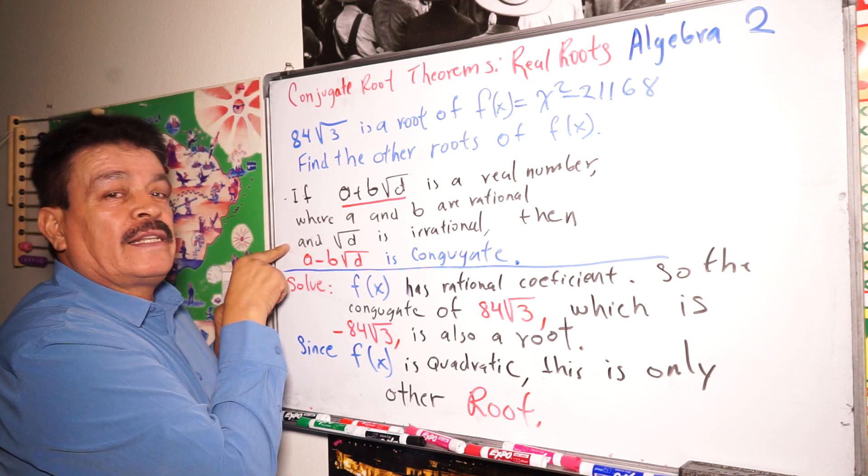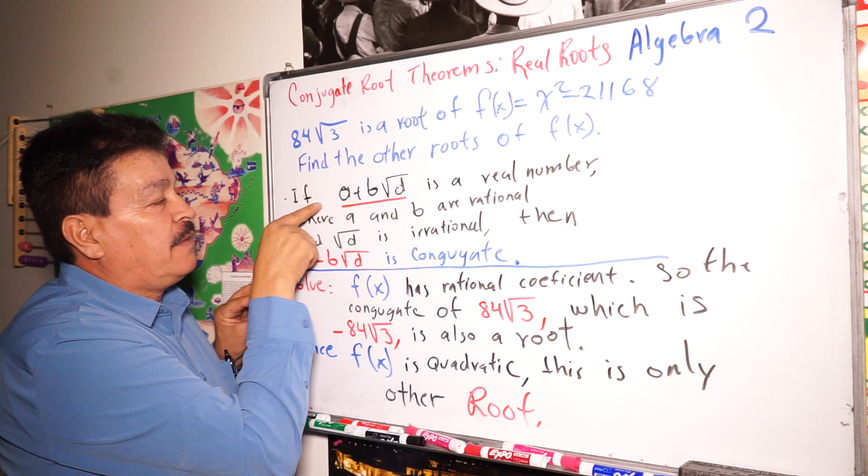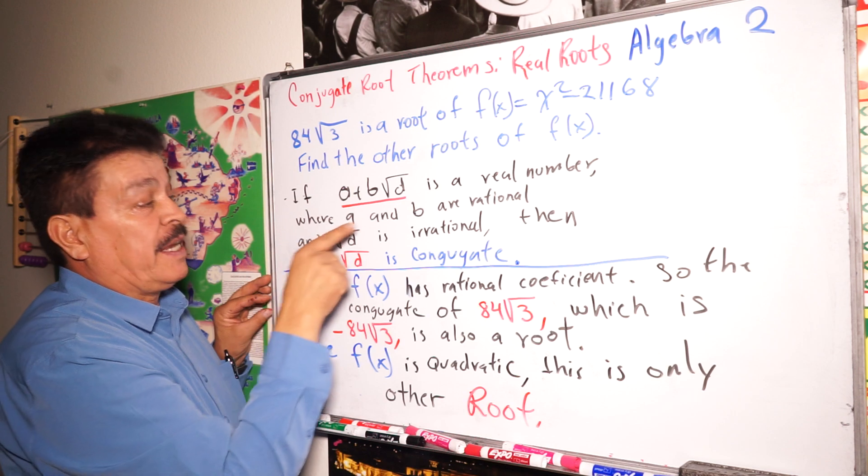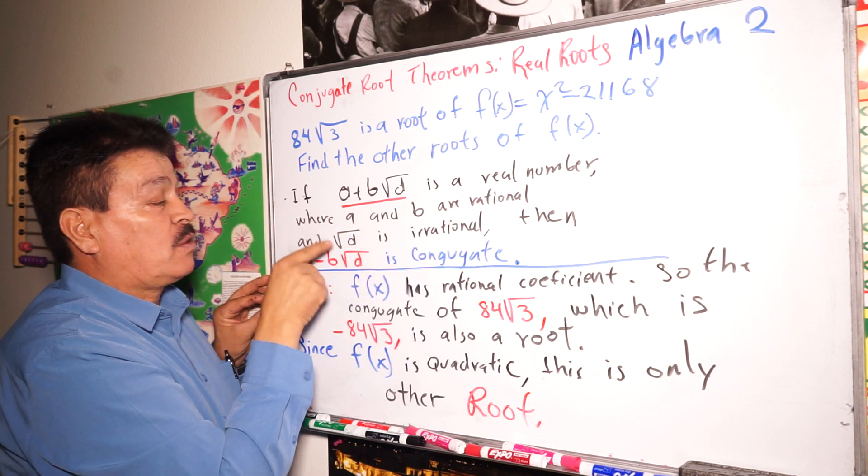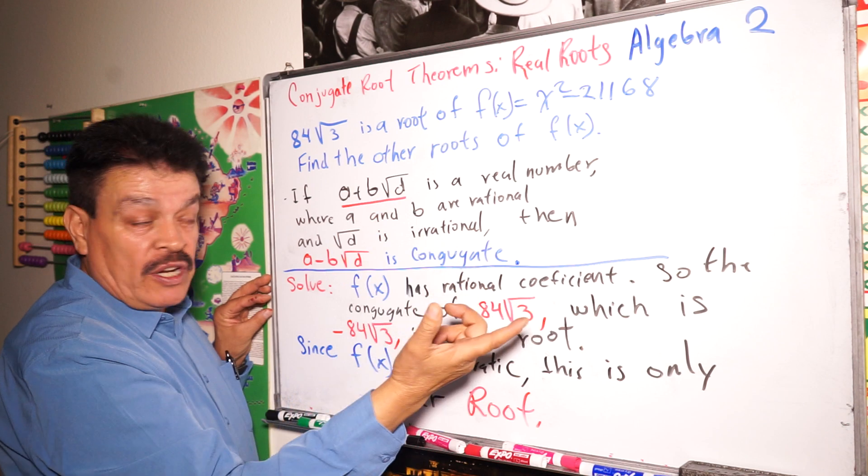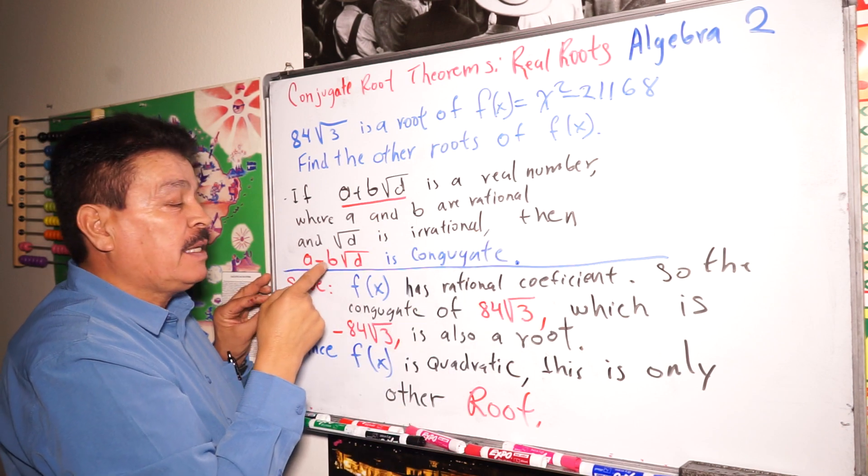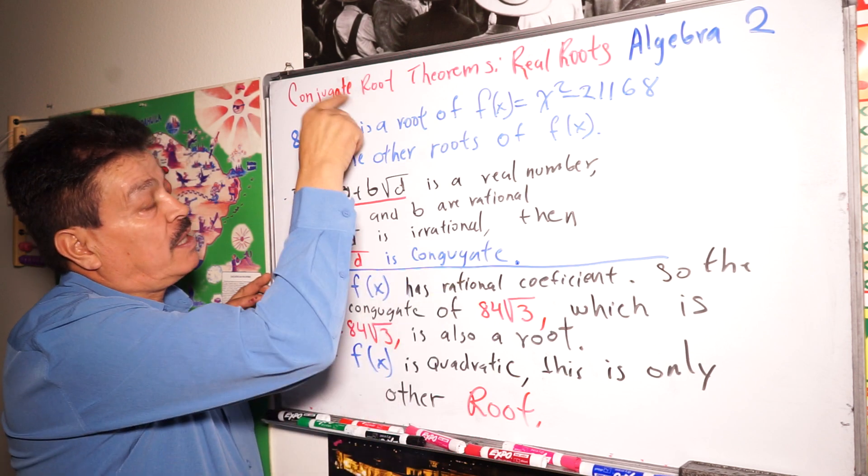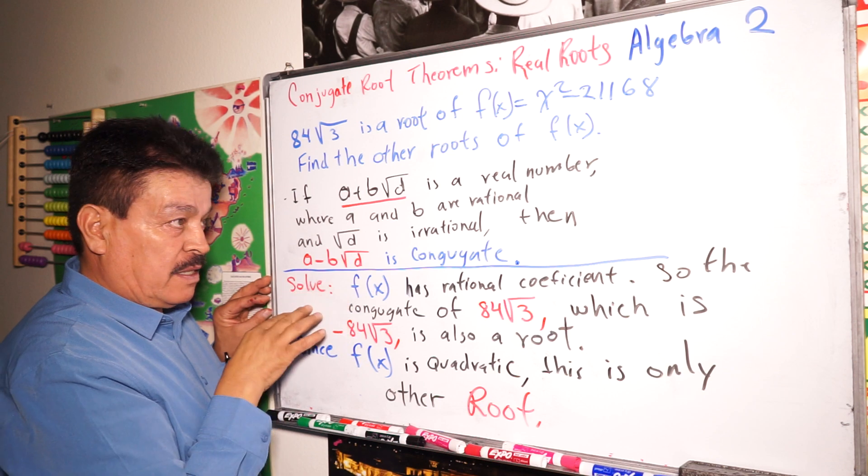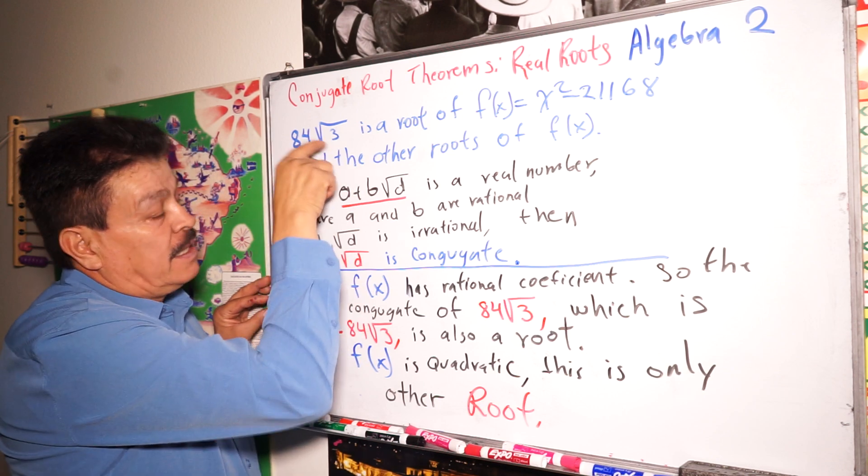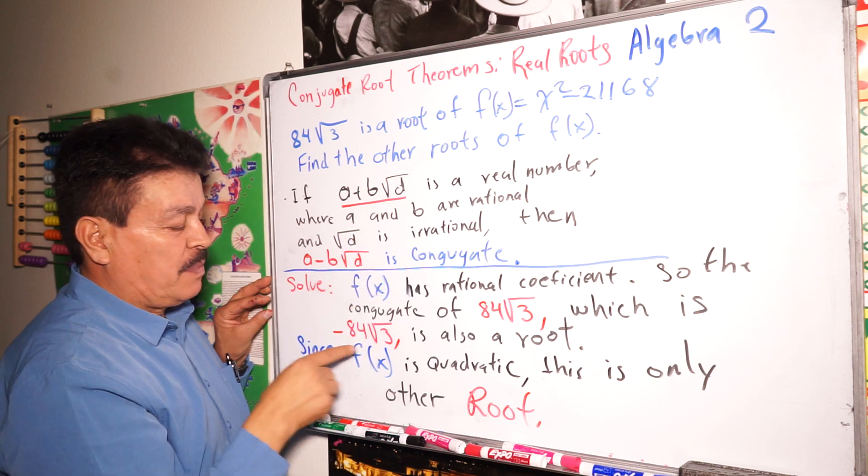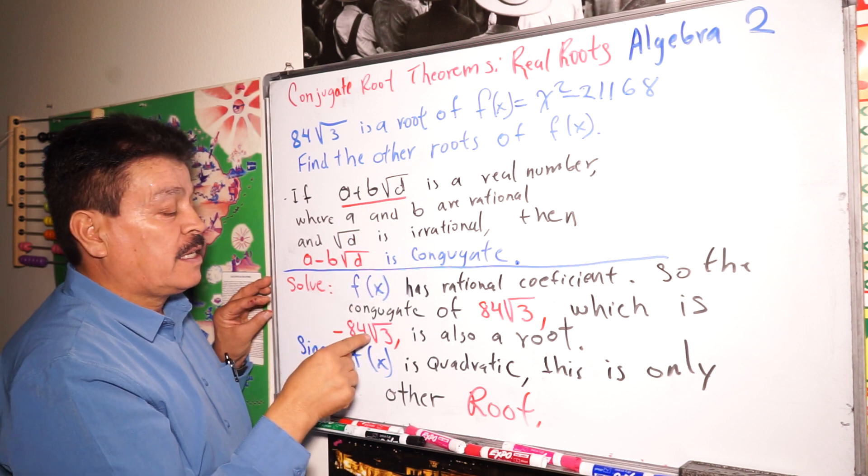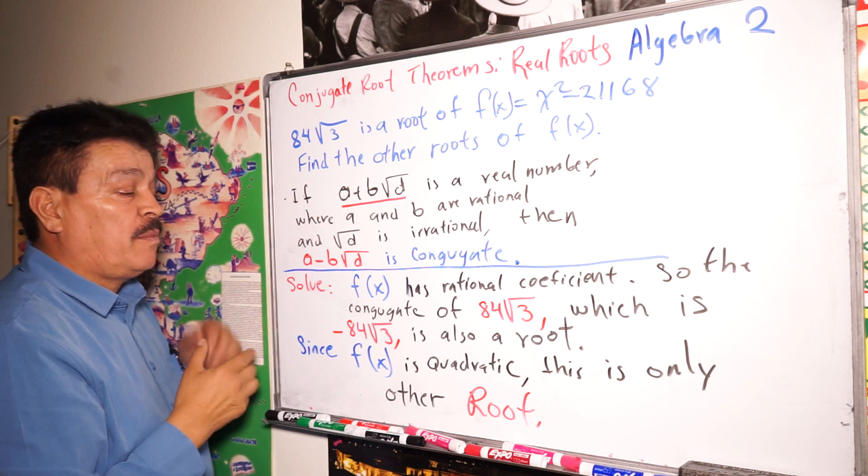When introducing this little concept idea: if a plus b times square root of d is a real number where a and b are rational and square root of d is irrational, then a minus b square root of d is conjugated. This is our topic for today. So, when we take the data here. So, the conjugated root is negative 84 square root of number 3.